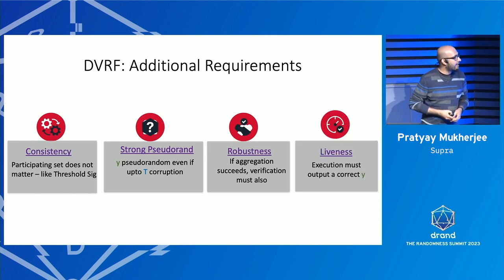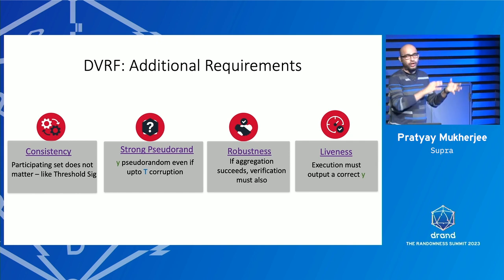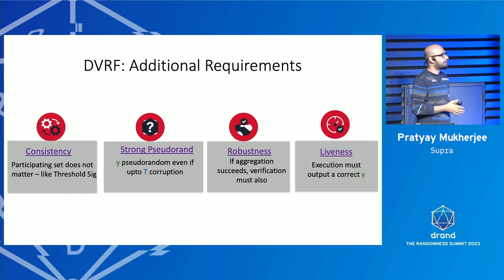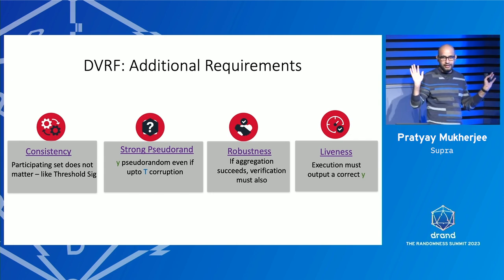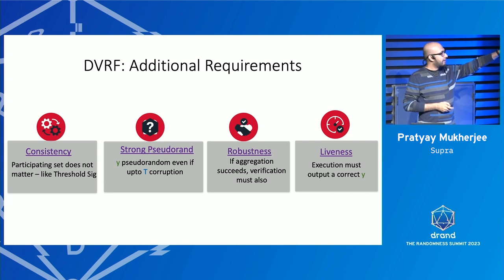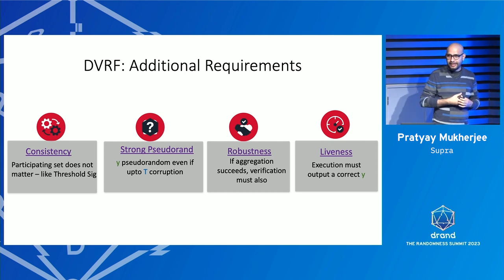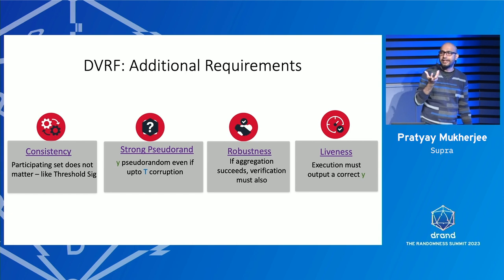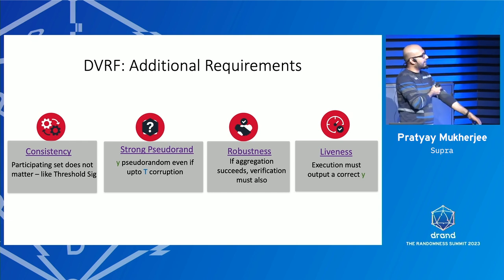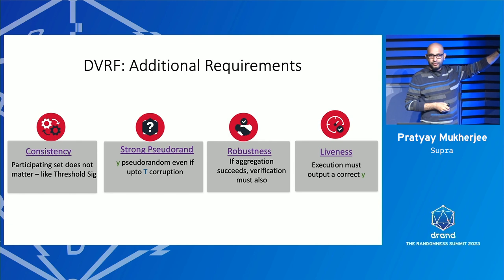Liveness — guaranteed output delivery — is required, and for this we need honest majority, meaning the threshold cannot exceed N/2. Guaranteed output delivery is impossible without robustness, because aggregation might choose wrong values, and after reconstruction you would see an invalid result that isn't detected. You need to detect bad values immediately. So honest majority plus robustness together achieve liveness.